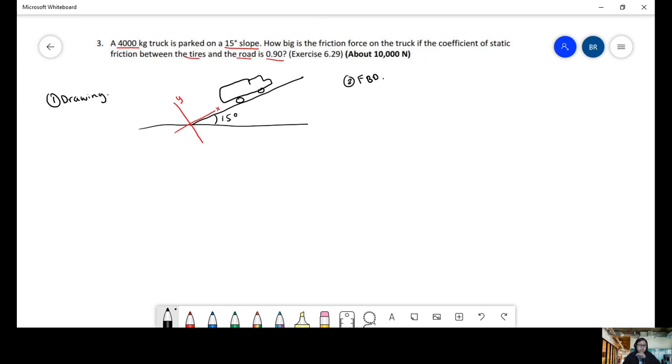So instead of using the horizontal as the x-axis, because remember, axes are arbitrary. So you can choose whatever you want them to be, but as long as you stay consistent. For example, you cannot have your y-axis at an angle and your x-axis at an angle. They have to be 90 degrees from each other. So I'm going to follow that rule. So this is my x-axis, and everything perpendicular is my y-axis. Perpendicular means 90 degrees.